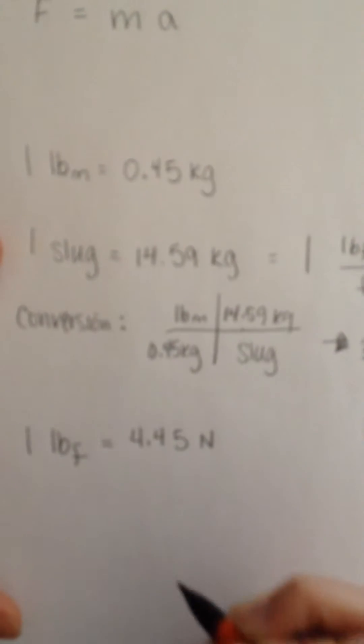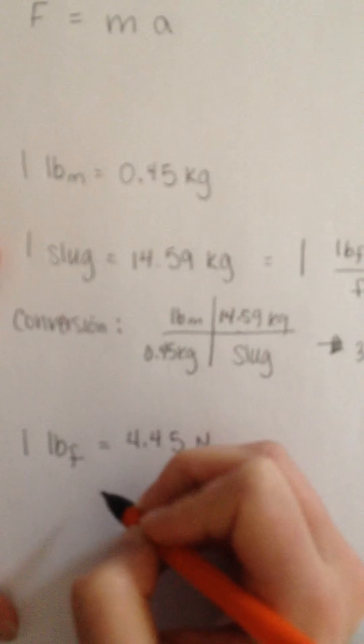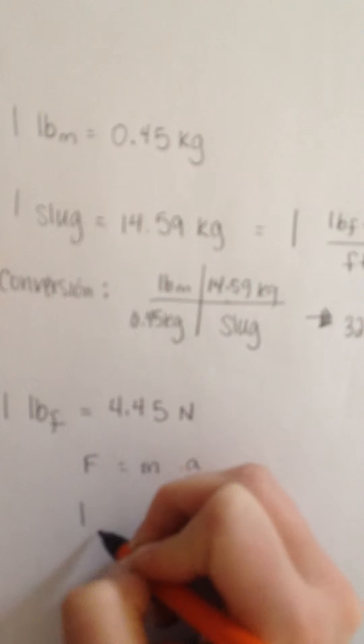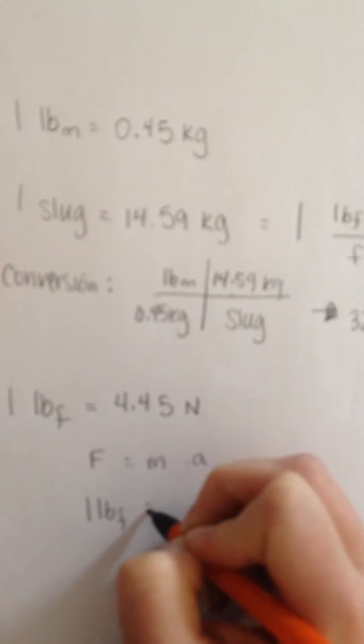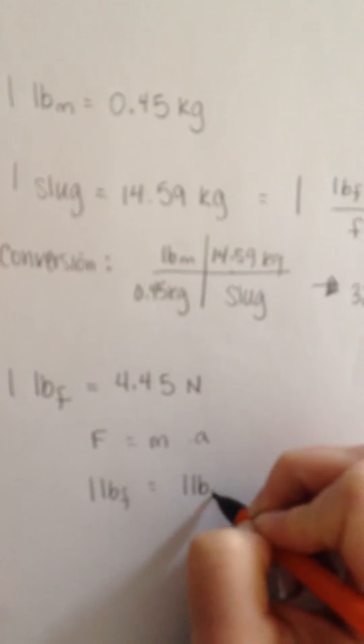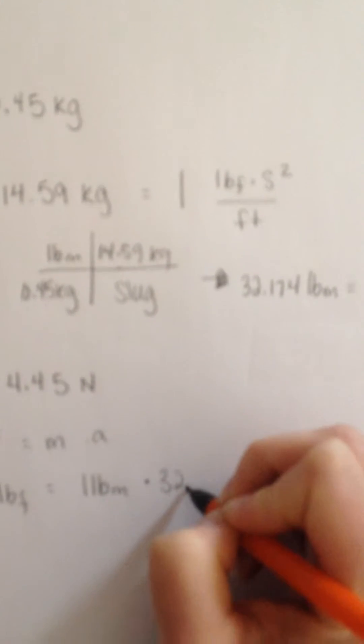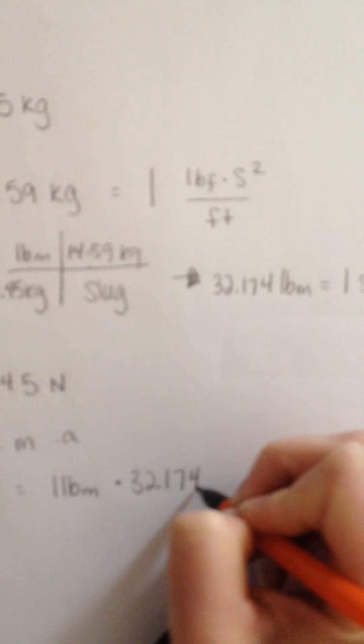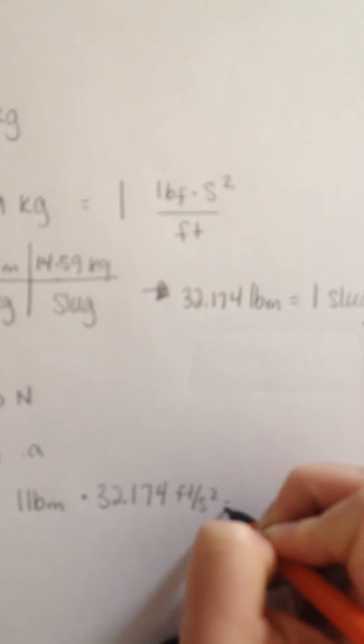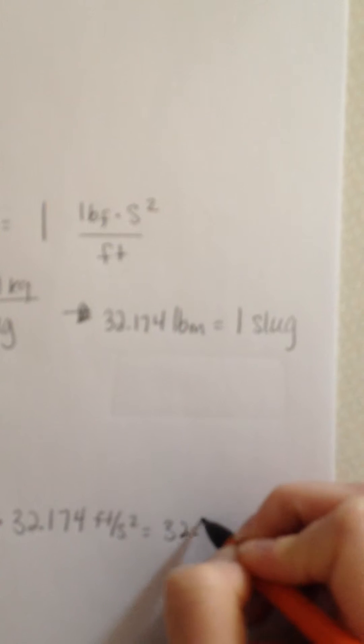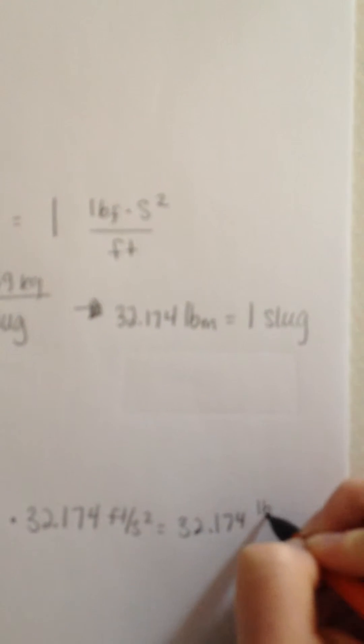Going back to that first equation, force equals mass times acceleration, we put in one pound force for the force and one pound mass for the mass. If we multiply that by 32.174, which is the acceleration due to gravity, we find that one pound force is equivalent to 32.174 pound mass feet per second squared.